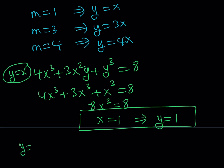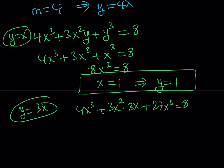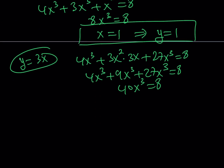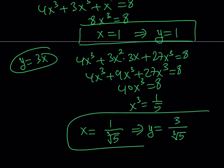For y equals 3x, substituting into the first equation: 4x cubed plus 3x squared times 3x plus (3x) cubed equals 8, giving 4x cubed plus 9x cubed plus 27x cubed equals 8. That's 40x cubed equals 8, so x cubed equals 1/5. Cube rooting both sides, x equals 1 over the cube root of 5. And since y equals 3x, y equals 3 over the cube root of 5. That's the second ordered pair.